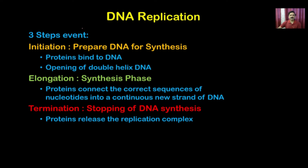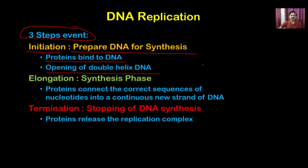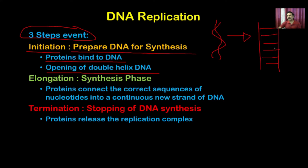DNA replication has three events. The first is initiation, where the DNA prepares for synthesis. Proteins bind to the DNA and the double helix opens to form single-stranded DNA, so that the enzyme can read the bases. The DNA is converted to single-stranded form so that nucleotides are accessible for the enzyme to synthesize complementary strands.